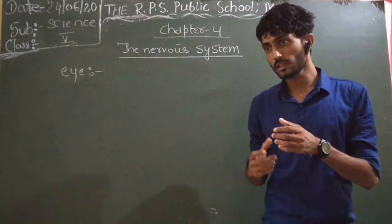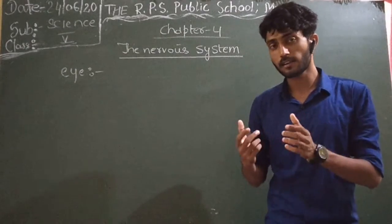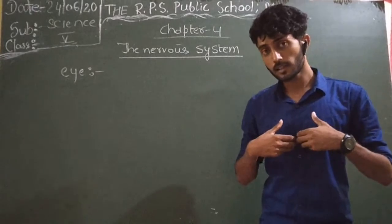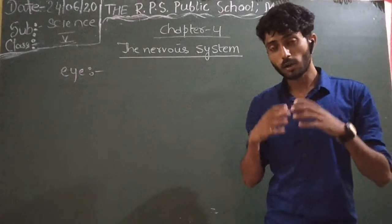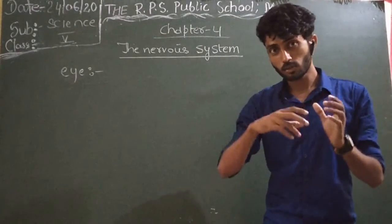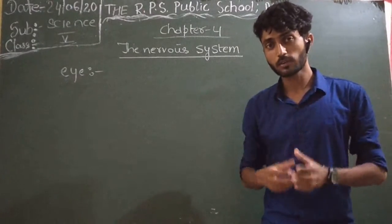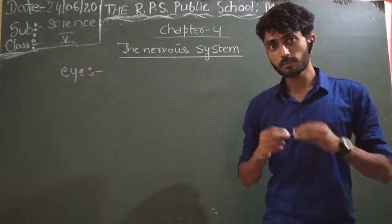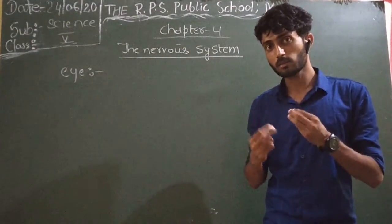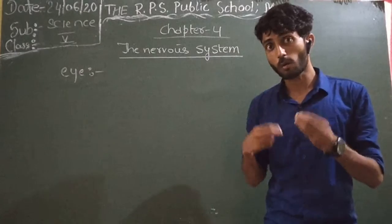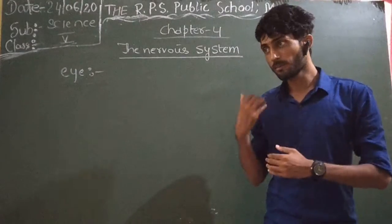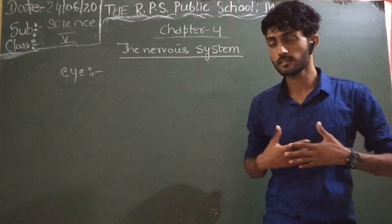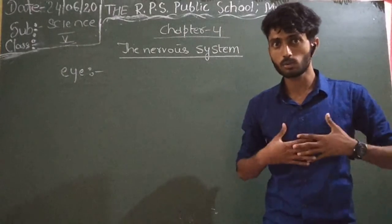The brain also does the processing. If your eyes take a picture — for example, the color is blue — your sensory optic nerve sends that message to the brain, and the brain processes and recognizes that the color matches something like blood.